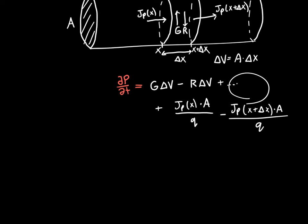We want to put the equation in a nicer form that's easier to work with mathematically and independent of the particular region. So we want to convert from total number of holes to hole density by dividing by the total volume delta V. We have a delta V in the generation and recombination terms, but for the current terms we need to multiply by delta x over delta x to introduce a delta V there as well.